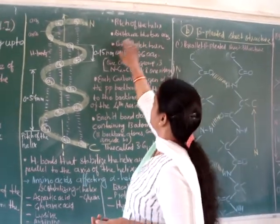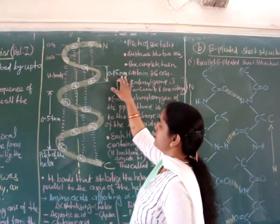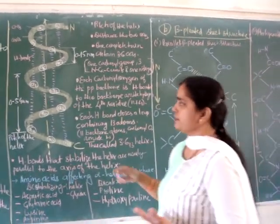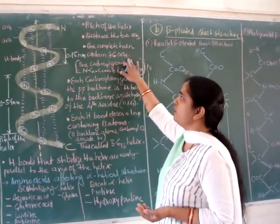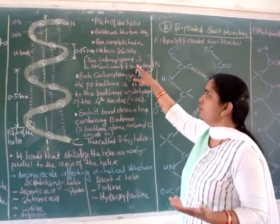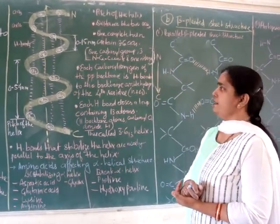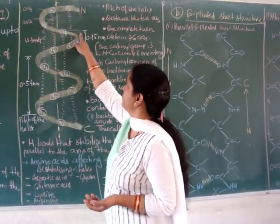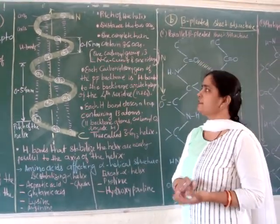The distance between two adjacent amino acids is 0.15 nanometers. A complete turn contains 3.6 amino acids, which includes one carbonyl group, three N-Cα-C carbon units, and one nitrogen atom. Dividing the pitch (0.54 nm) by the distance per amino acid (0.15 nm) gives 3.6 amino acids per turn.